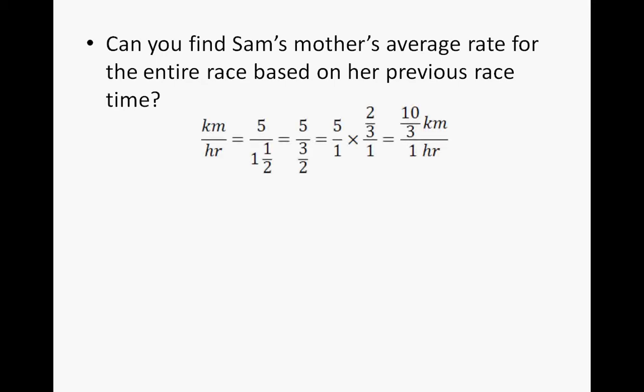Can you find Sam's mother's average rate for the entire race based on her previous race time? Well, this is how we do it. If we want her rate, we know that it's going to be kilometers over hours. We're given that she can do 5 kilometers in 1.5 hours. Since that sets up a complex fraction, we have to clear the denominator, we end up multiplying by the reciprocal 2/3, which gives us 5 over 1 times 2/3 over 1. And when we do 5 times 2/3, we end up with 10/3 kilometers over 1 hour.